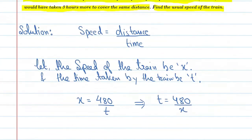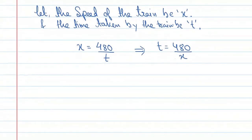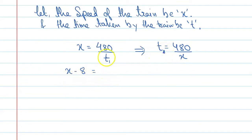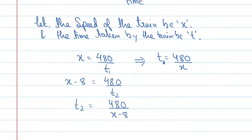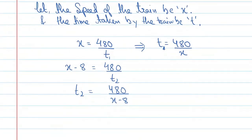Now, according to the condition, if the speed is reduced, then the new speed is x minus 8. The new time t2 equals 480 upon x minus 8. And the difference in time is 3 hours.